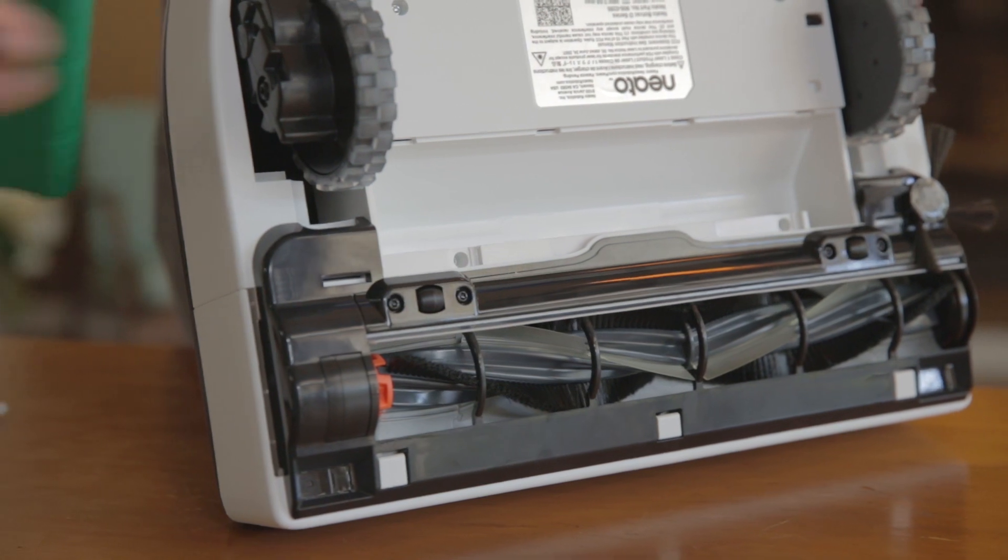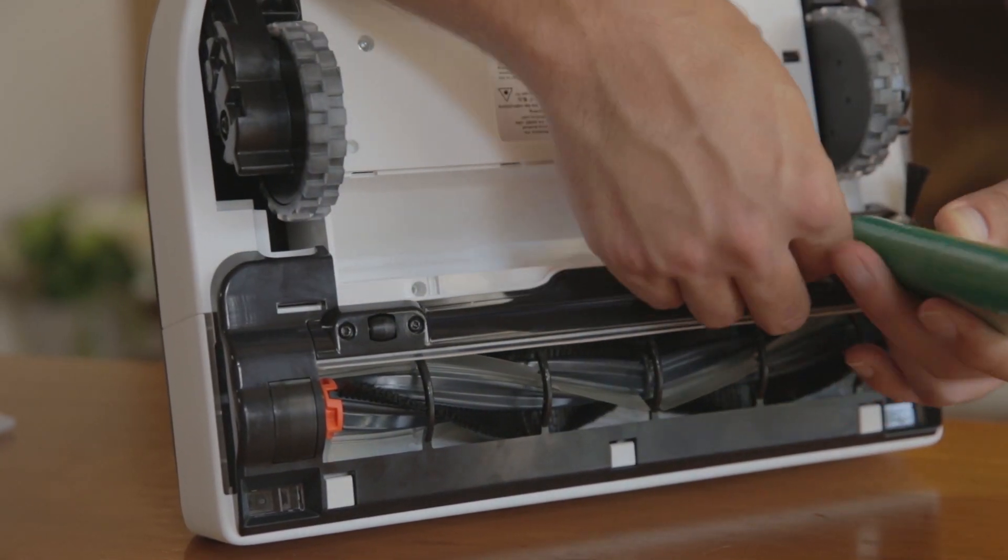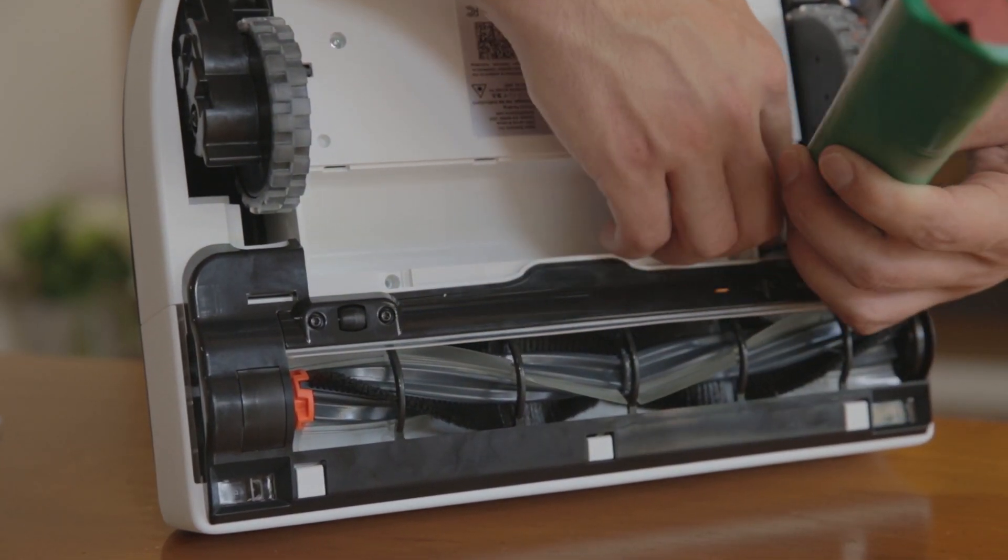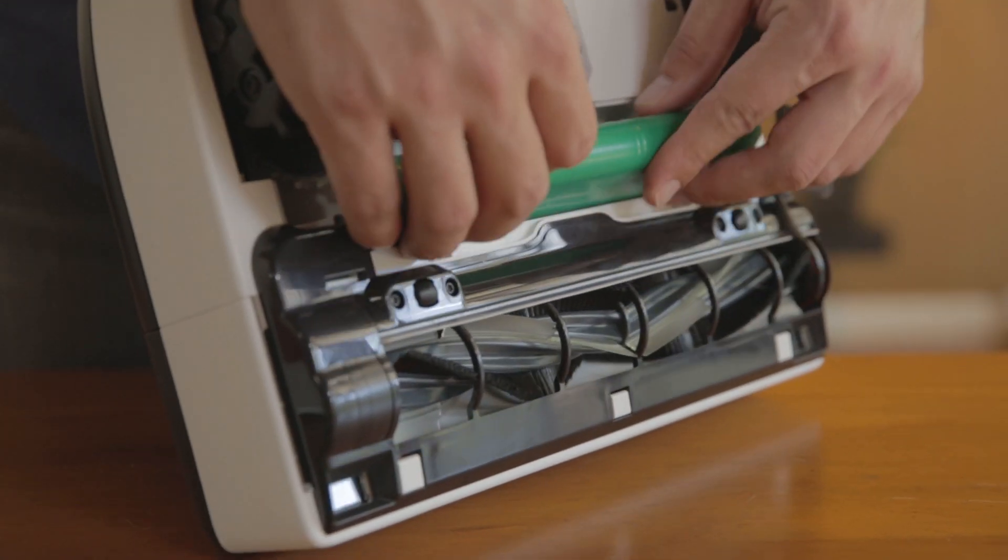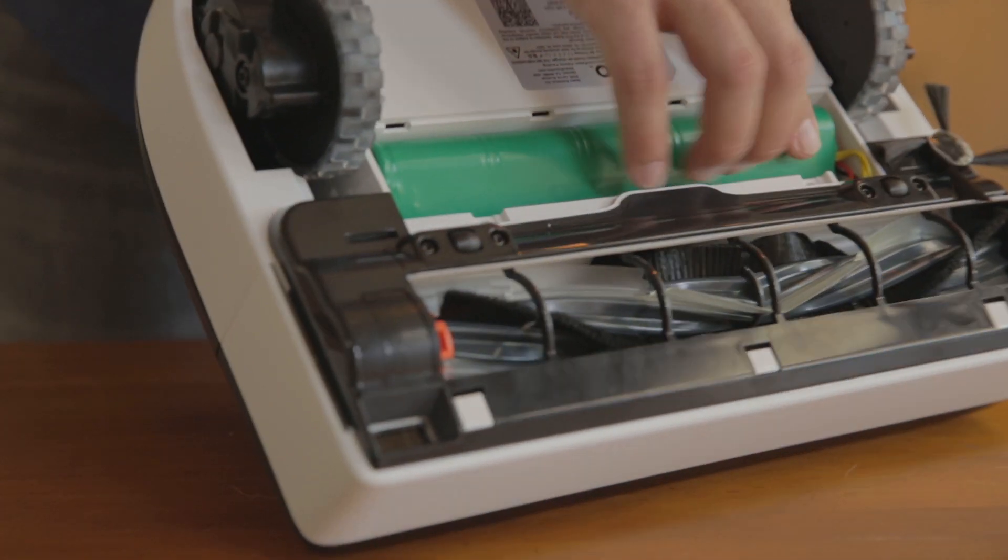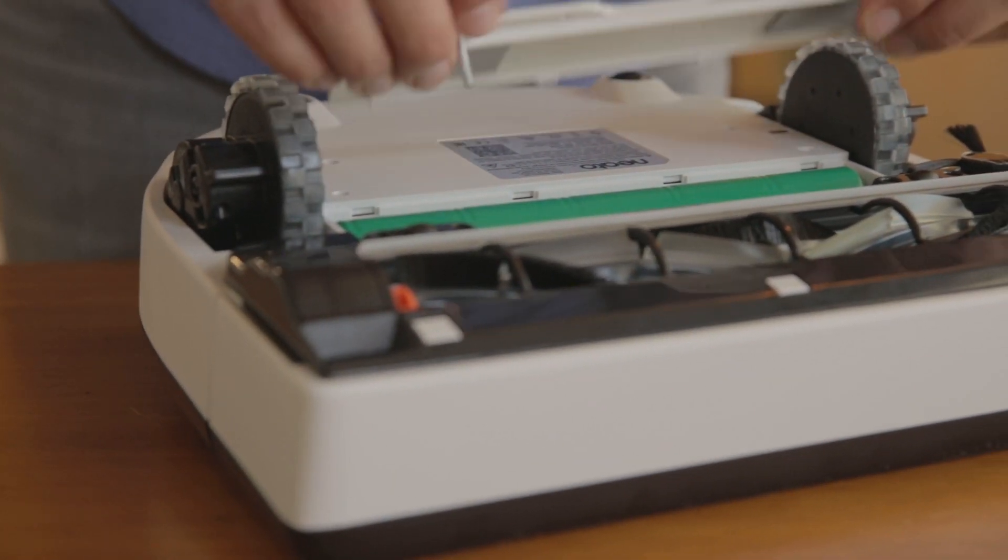Afterwards, grab your new battery, use your finger to release the clip, and insert the connector into the robot. Place the battery back into the battery cavity and reinstall the battery door.